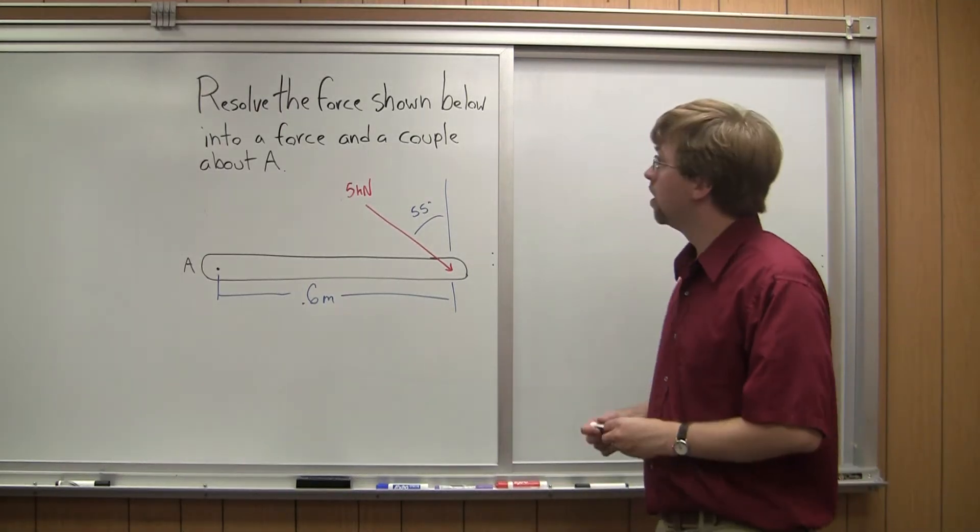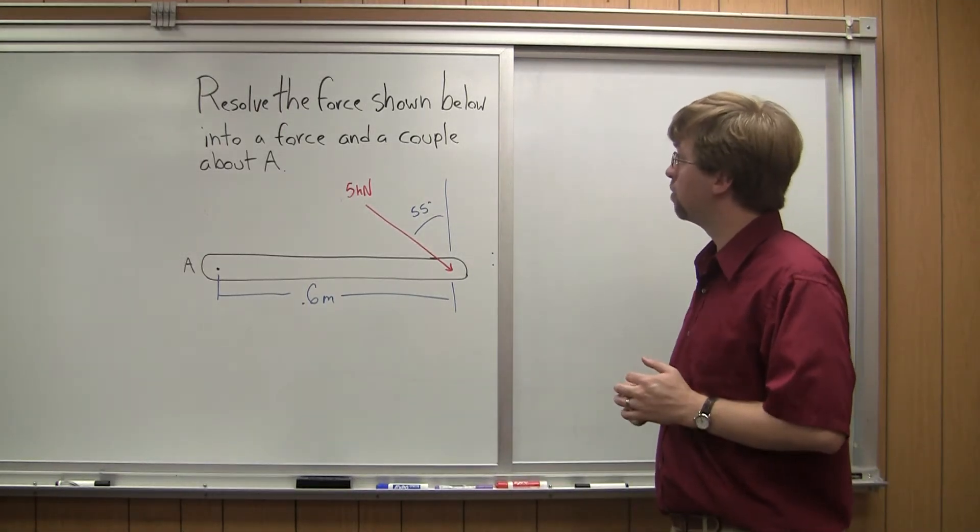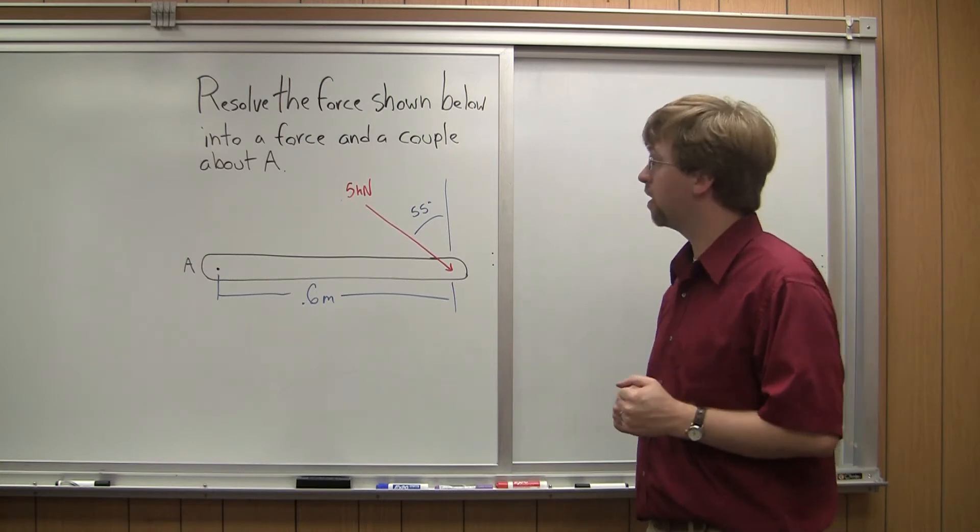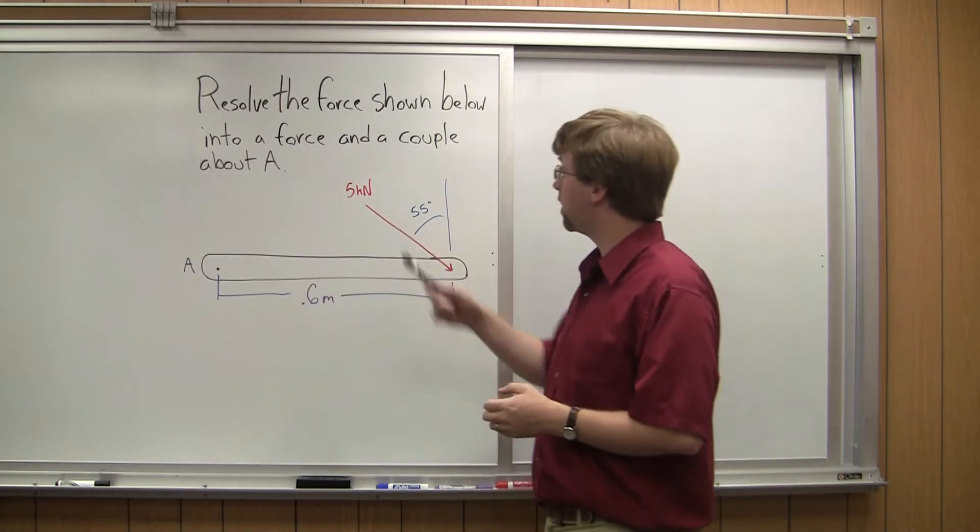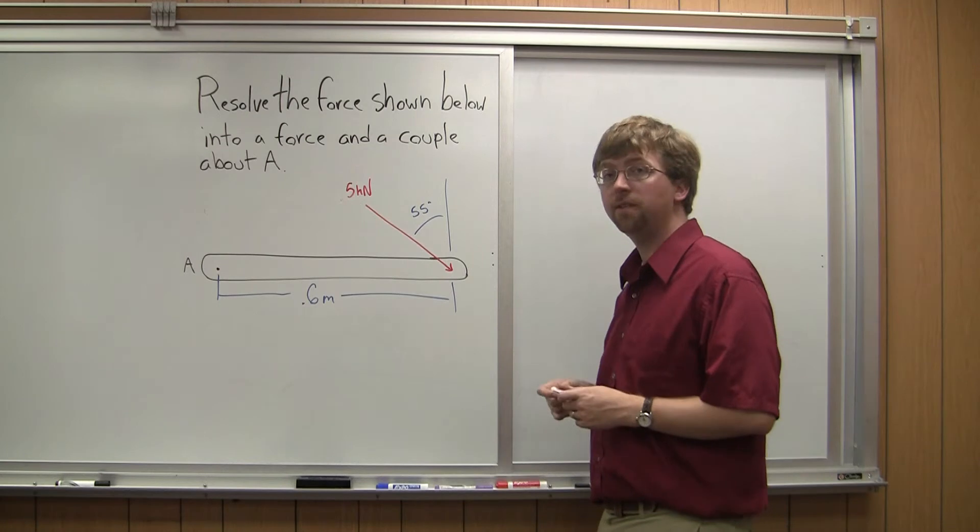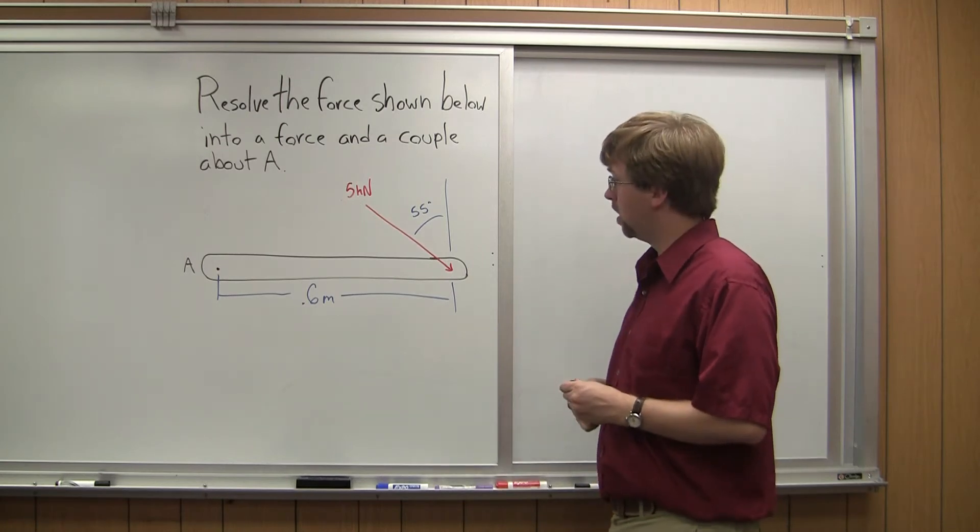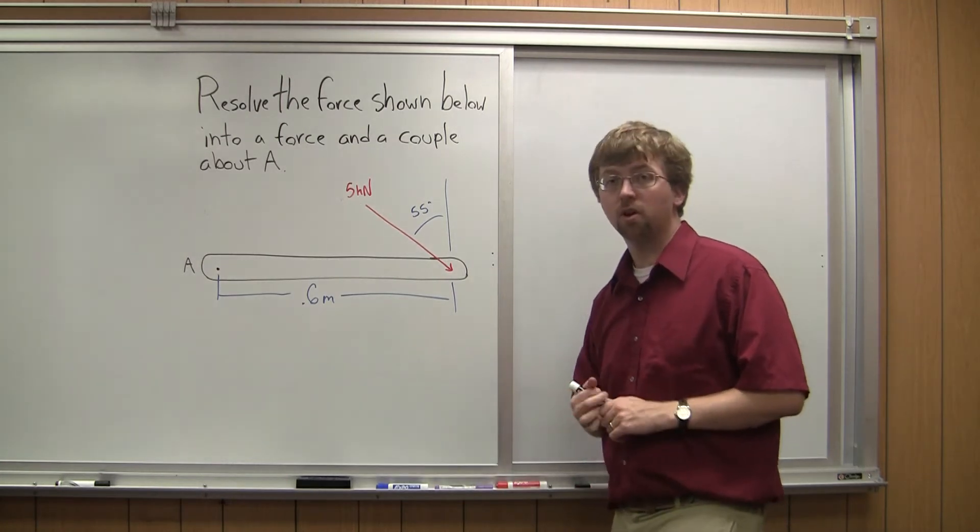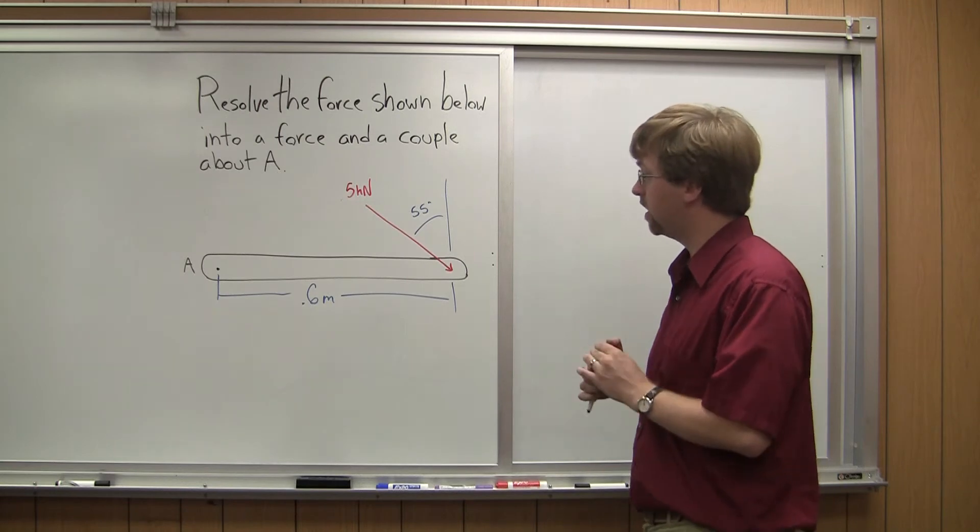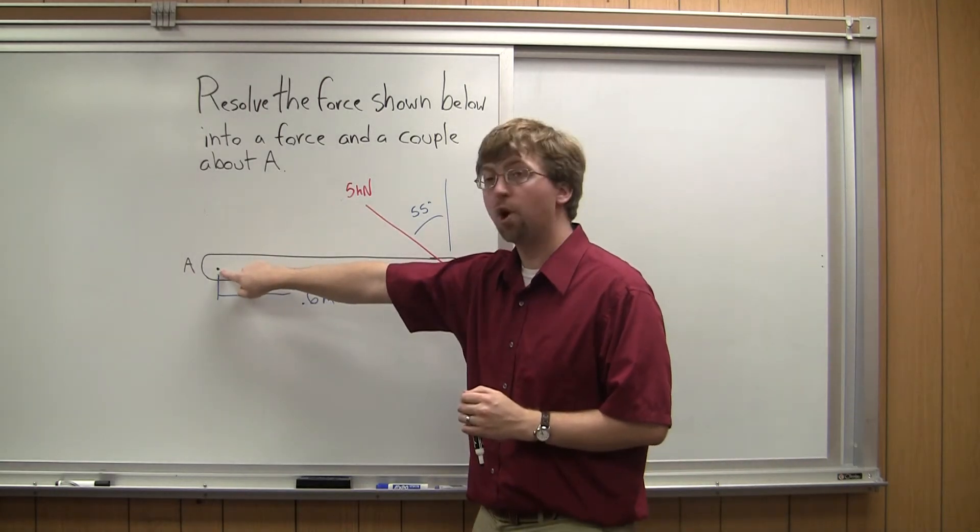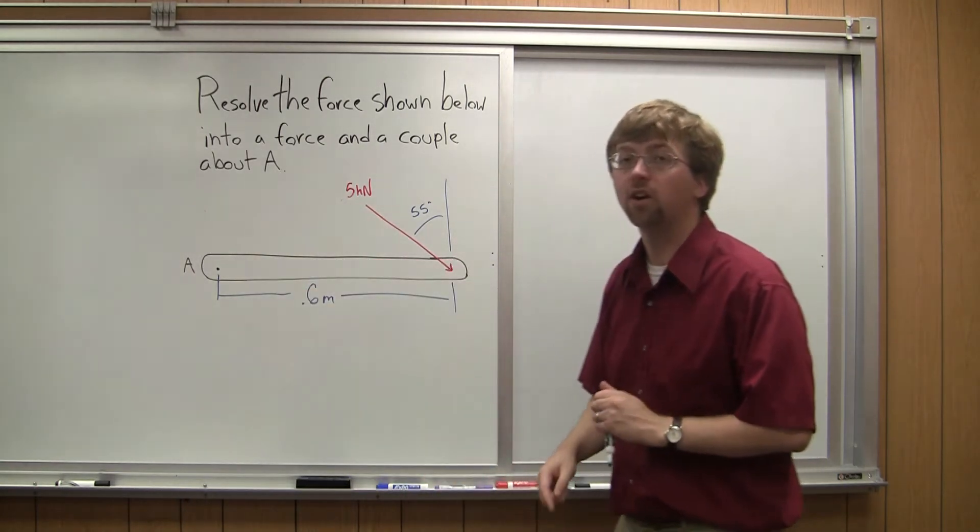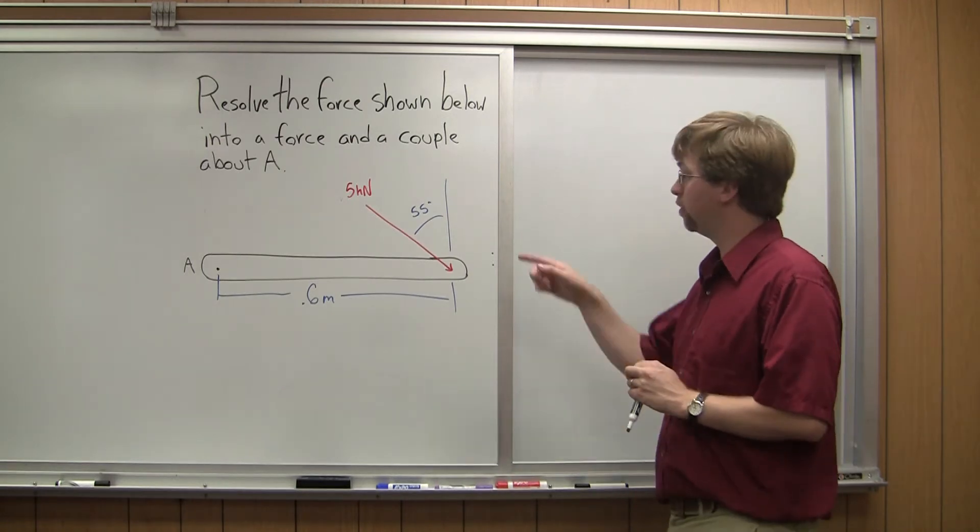Alright, so for this example, I'm asked to resolve the force shown below into a force and a couple about point A. I've got a 5 kilonewton force acting 55 degrees from vertical at the end of a 0.6 meter long beam. So I want to find the force and the moment acting at this point A that is statically equivalent to my original setup.